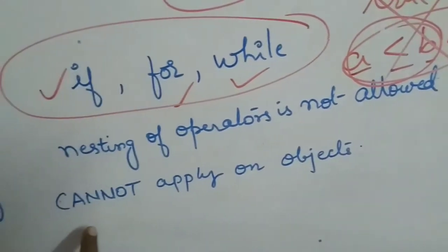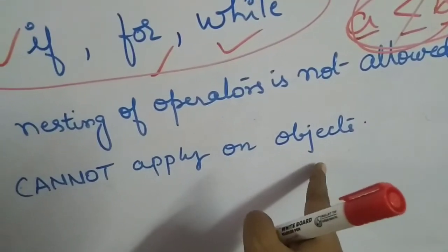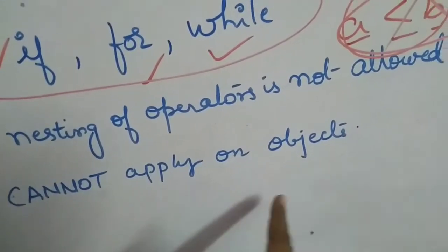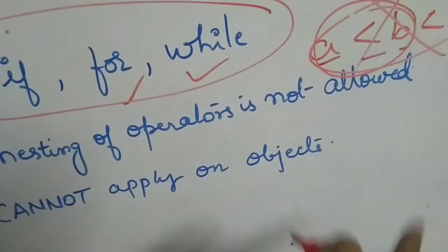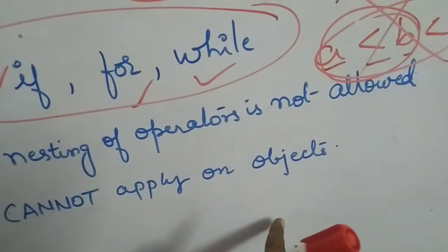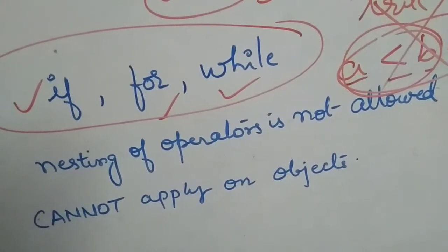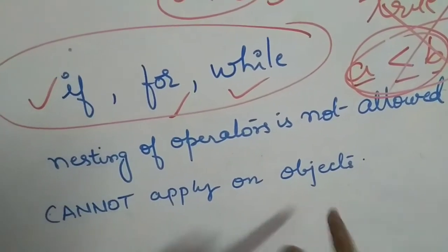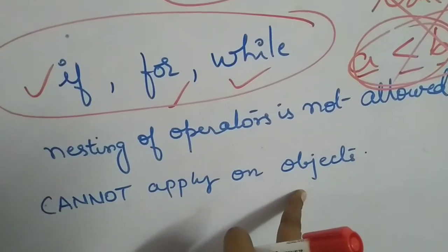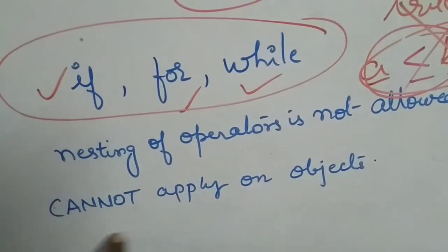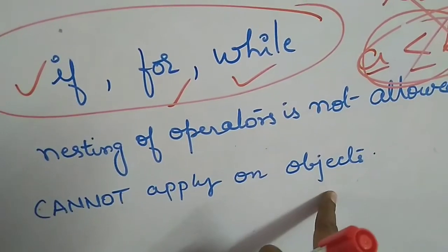Relational operators cannot be applied on objects. You cannot compare two objects directly. You can compare the values of objects, like the members of the class, but you cannot compare the objects themselves. So you cannot apply these operations on objects.